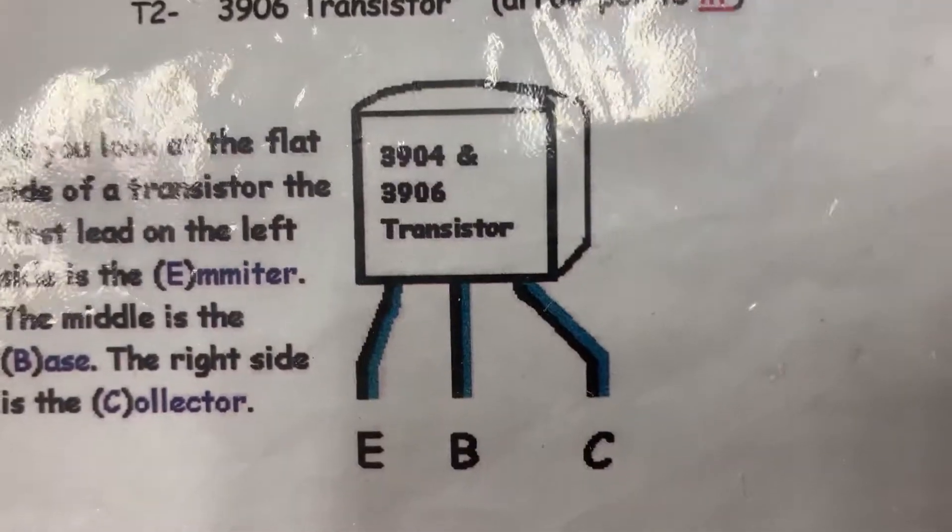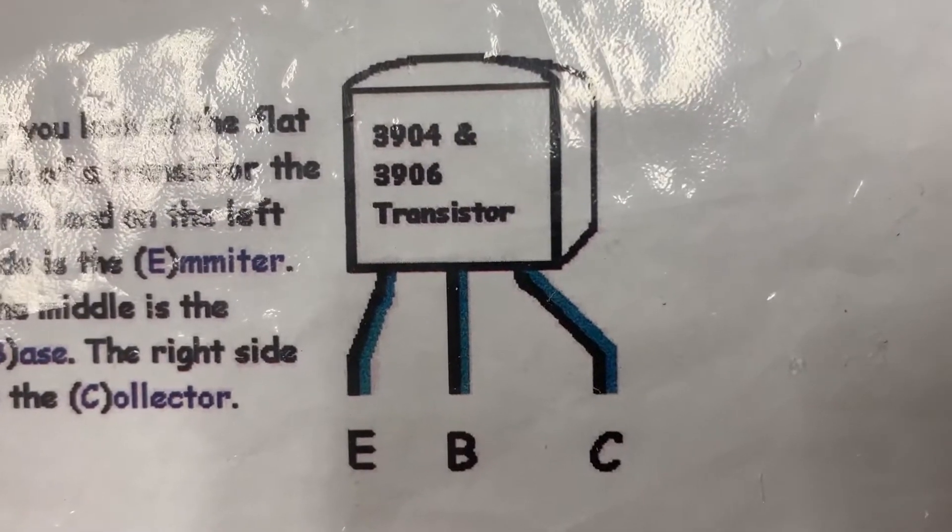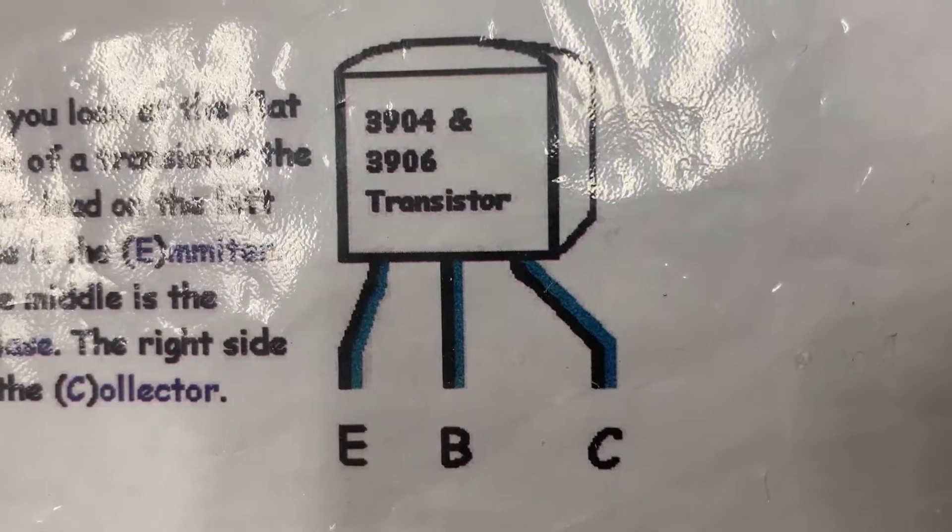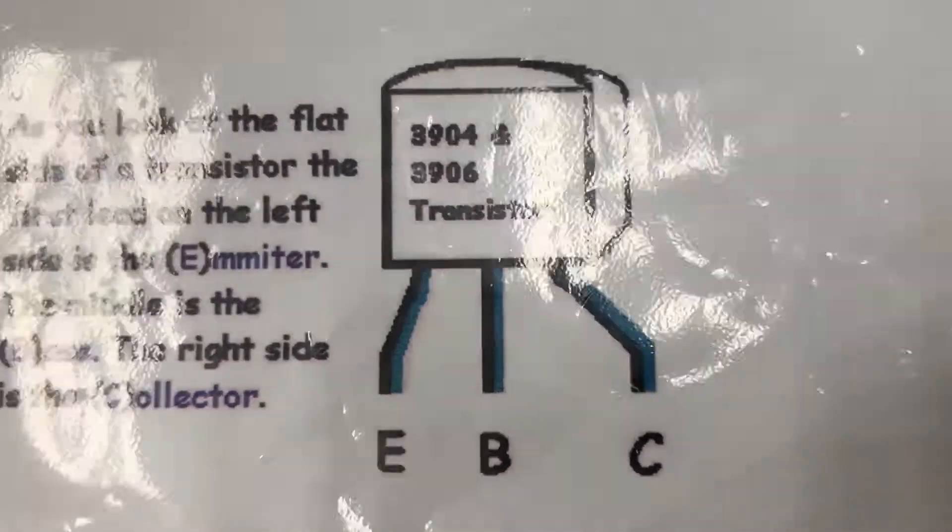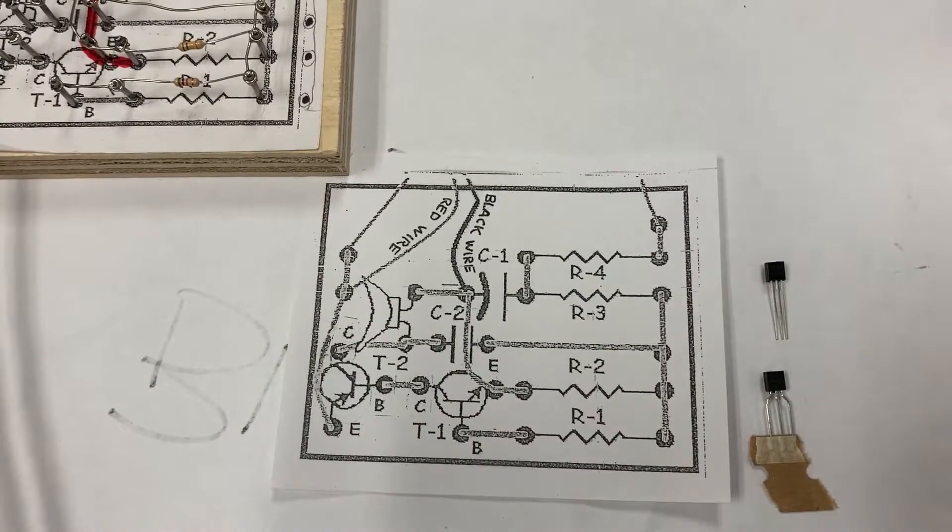Looking at your information sheet, you can see that the legs of the transistor are given numbers, or letters: E, B, and C. You need to match the legs up with the nail of the same letter.